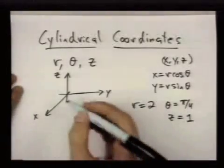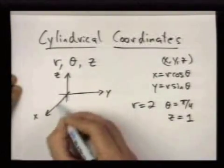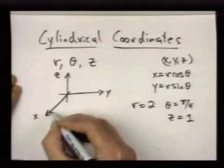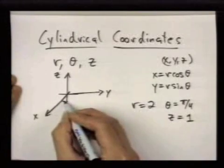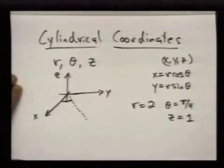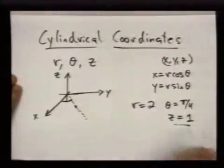The point this describes: first we make an angle of π/4 with the x-axis. That puts me kind of there. Then I go out a distance of 2 on that line, and then I go up by 1.